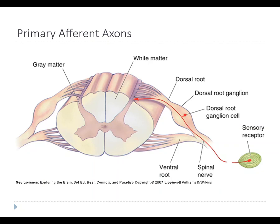These axons come from cells called dorsal root ganglia. You can see the dorsal root ganglia in this picture, which is a cross-section of the spinal cord. Here's the spinal cord — this is the dorsal side and this is the ventral side. The axons that come in to the dorsal side are called dorsal roots, and this lump here contains the cell bodies of the neurons that produce these axons — we call it the dorsal root ganglion.